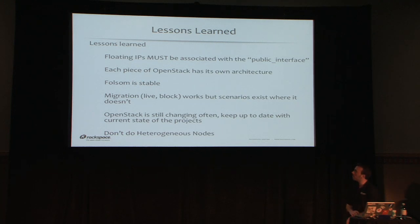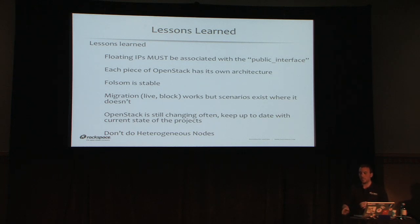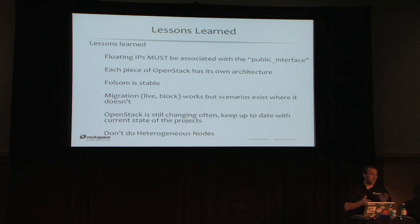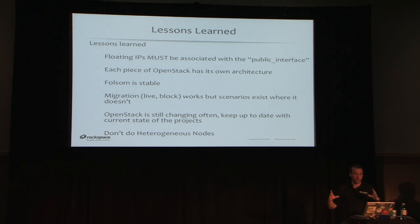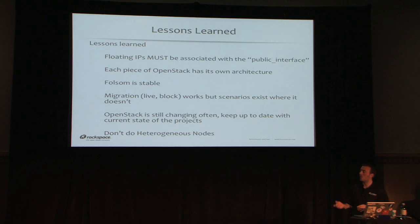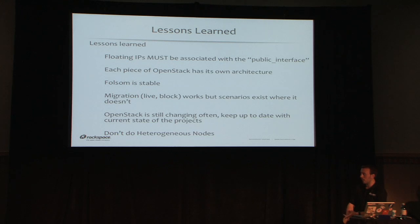Some lessons learned: floating IPs must be associated with the public interface flag, which sets up a number of iptables rules. Each piece of OpenStack has its own architecture — Swift, Cinder, Nova all have their own — so make sure you focus on all of them, not just one. Pretty much every slide here could be its own talk. Think about every project when building your private cloud.